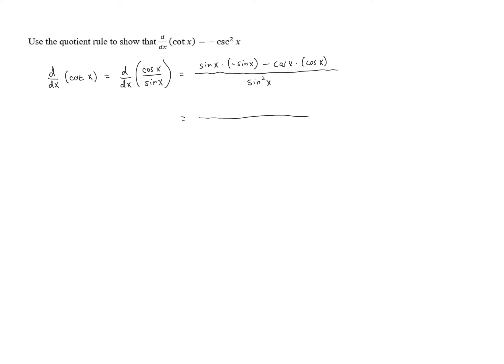Now if we look at simplifying the numerator, we've got sine times negative sine, that's negative sine squared x, and then minus cosine squared x, all over sine squared x.